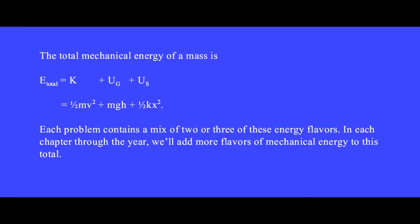The total mechanical energy of a mass is kinetic energy (one-half mv squared) plus stored gravitational potential energy U sub g (mgh) plus stored elastic potential energy U sub s (one-half kx squared). Each problem contains a mix of two or three of these energy flavors. In each chapter through the year, we'll add more flavors of mechanical energy to this total.